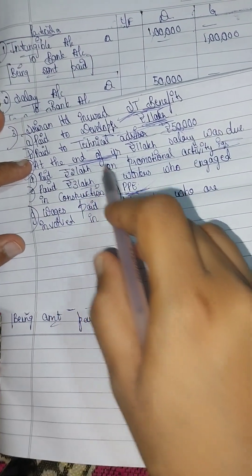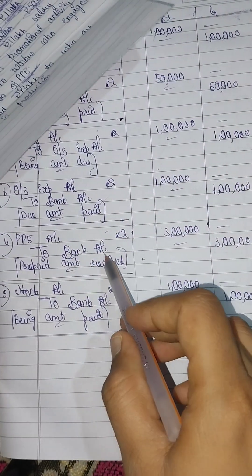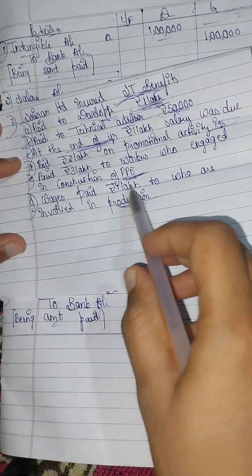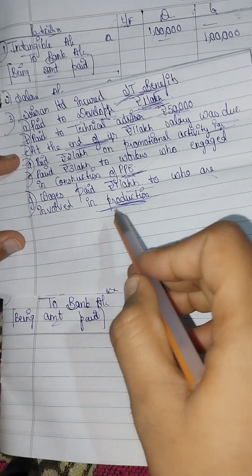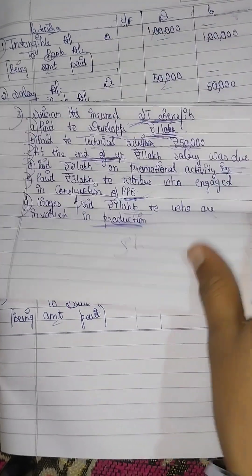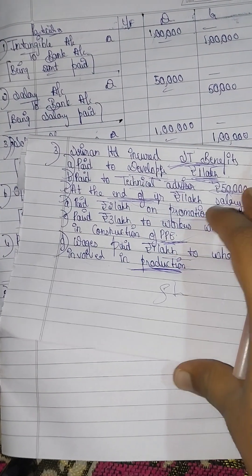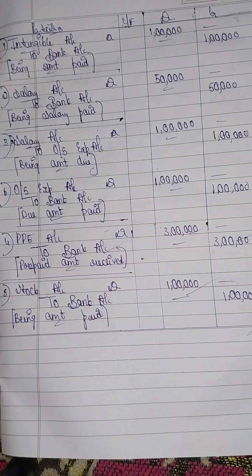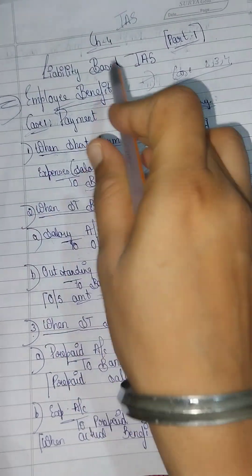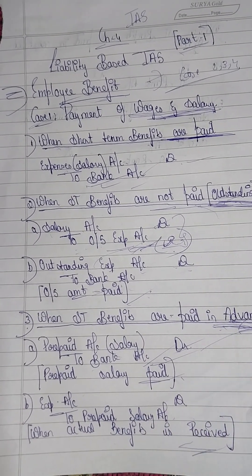Next, paid rupees 3 lakh to PPE — PPE account debit to bank account, as it is 3 lakh rupees. Next, paid rupees 1 lakh to workers involved in production — stock account debit to bank account, as it is 1 lakh rupees. So now this is Case 1. Thank you.